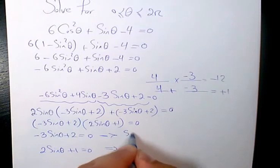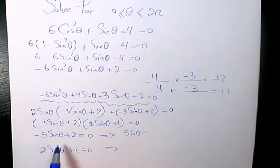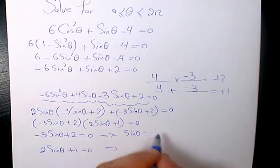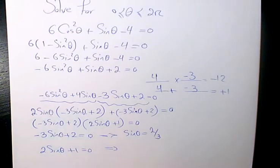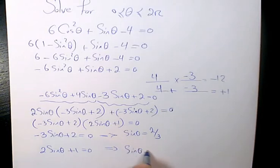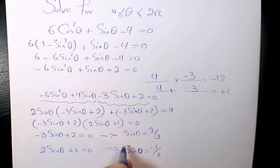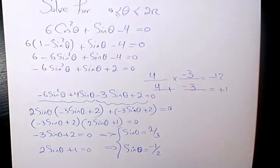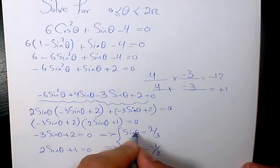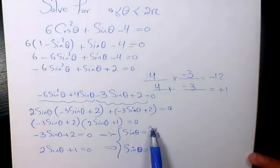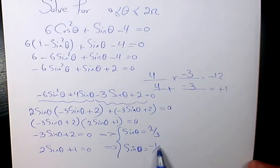Solving the first equation: negative 3 sine theta plus 2 equals 0, so sine theta equals negative 2 divided by negative 3, which is positive 2 over 3. Solving the second: 2 sine theta plus 1 equals 0, so sine theta equals negative 1 over 2.